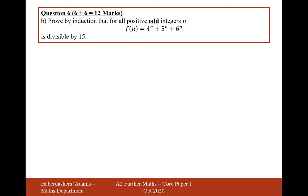Part B: prove by induction that for all odd positive integers n, f of n equals 4 to the power of n plus 5 to the power of n plus 6 to the power of n is divisible by 15. It's still proving true for n equals 1 because that's an odd integer. For n equals 1, f of 1 equals 4 plus 5 plus 6 equals 15, which is divisible by 15.